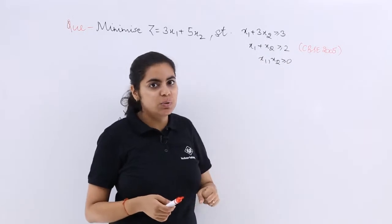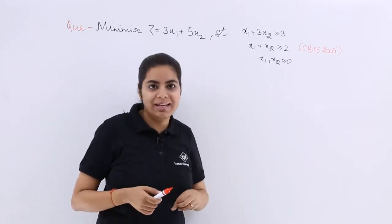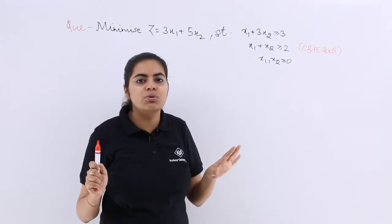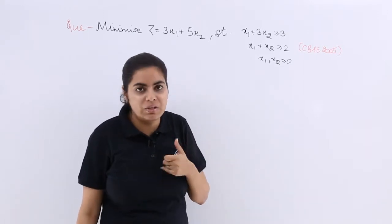x1 plus 3x2 greater than or equal to 3, x1 plus x2 greater than or equal to 2, x1, x2 greater than or equal to 0. As you know, what are the constraints? We have to name them for our convenience.